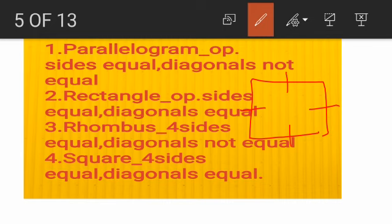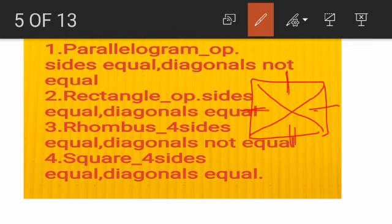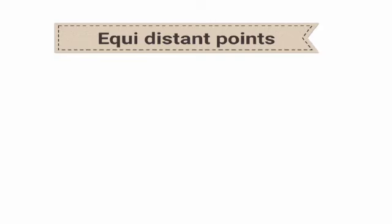To avoid confusion when deciding the type of quadrilateral, find both the side lengths and the diagonal lengths using the distance formula. If opposite sides are equal and diagonals are equal, it is a rectangle. If opposite sides are equal and diagonals are not equal, it is a parallelogram. If all four sides are equal and diagonals are also equal, it is a square. If all four sides are equal and diagonals are not equal, it is a rhombus.